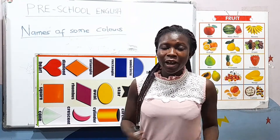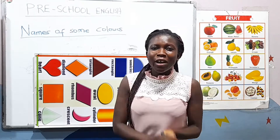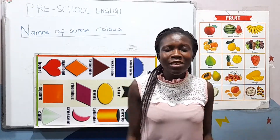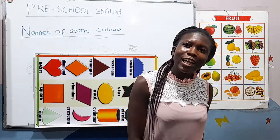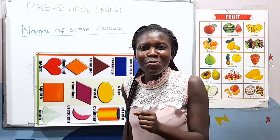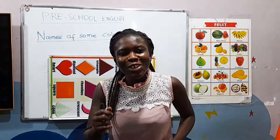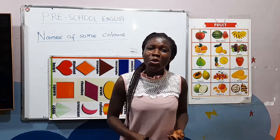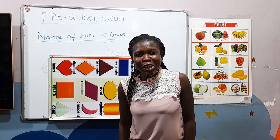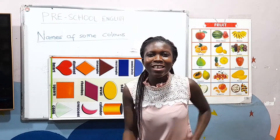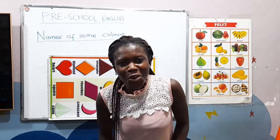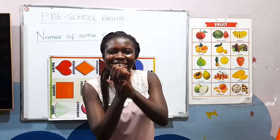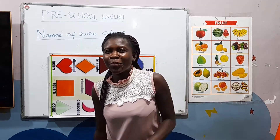Before that, let's warm up ourselves with this rhyme. Are you ready? When you see a traffic light, there is something you should know: red means stop, yellow means get ready, green means go, go, go and go. Well done kids, I hope you have enjoyed this rhyme.